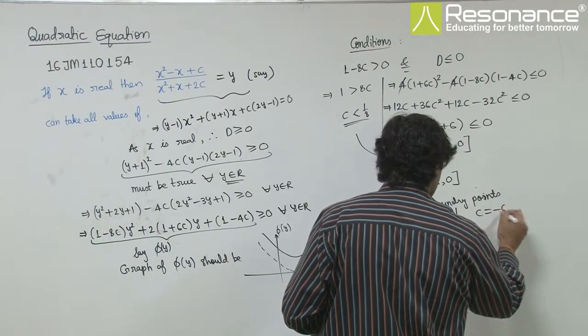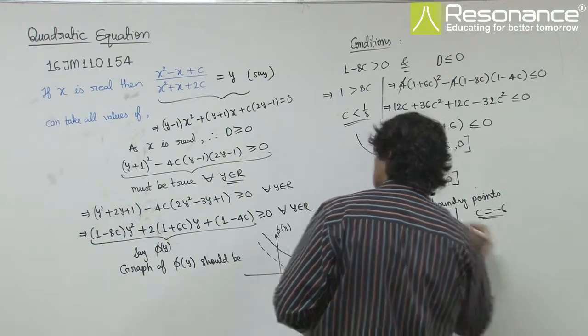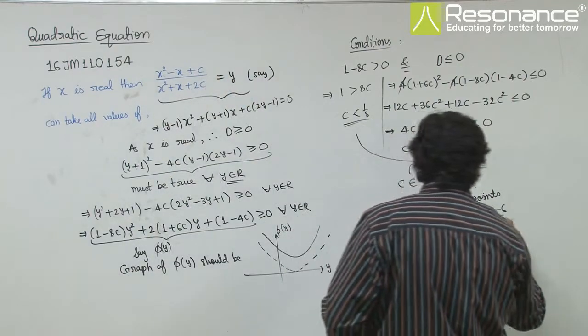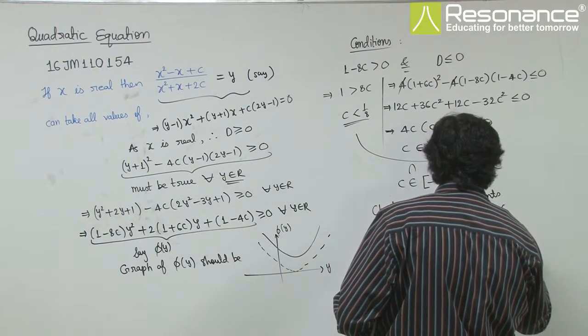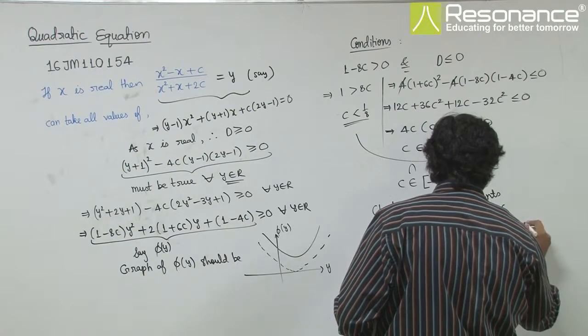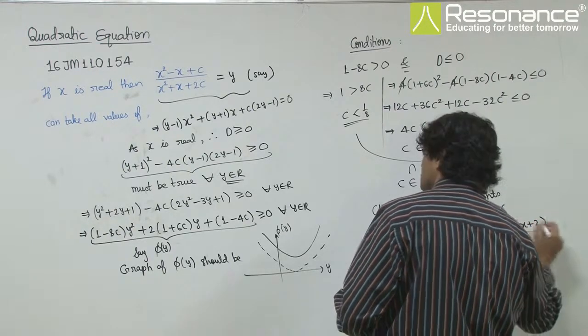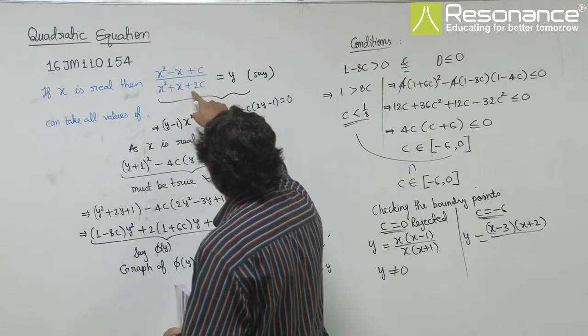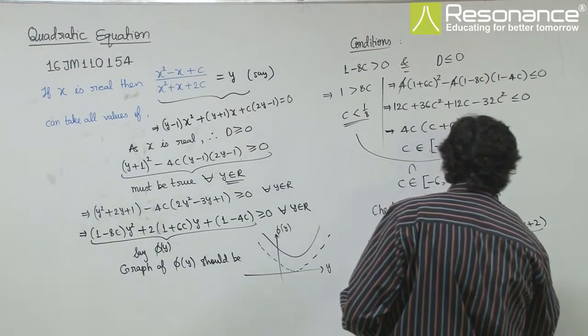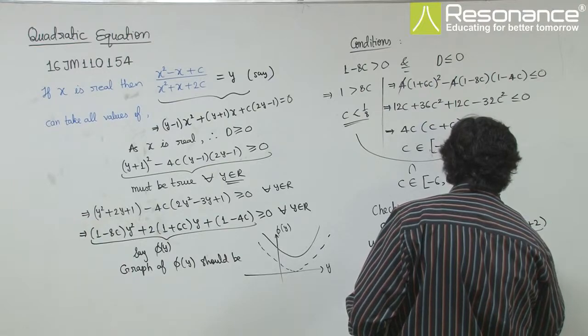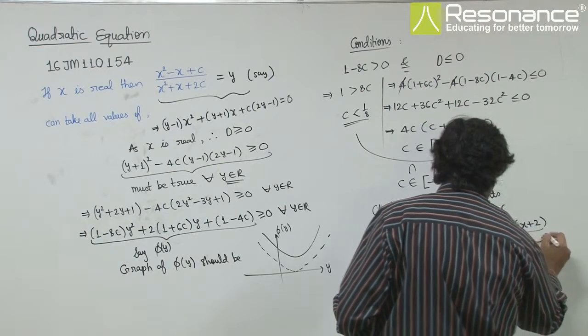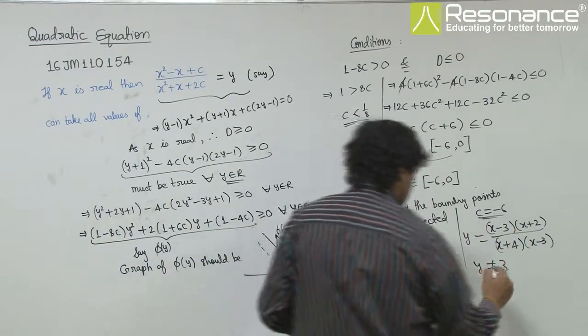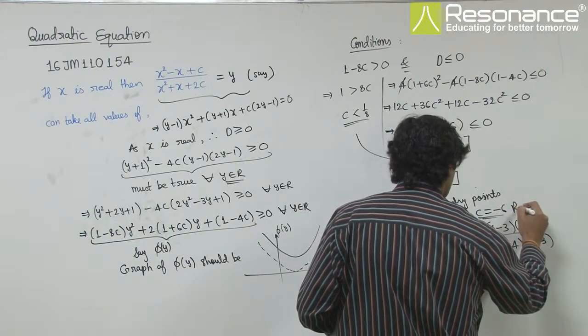And taking c equal to minus 6, we get x square minus x minus 6, which factors as (x minus 3)(x plus 2). And this becomes, taking c as minus 6, minus 12, that means this becomes (x plus 4)(x minus 3). So, again x minus 3 is a common factor. So, y cannot be 3, it's not defined at 3, that means this is also rejected.